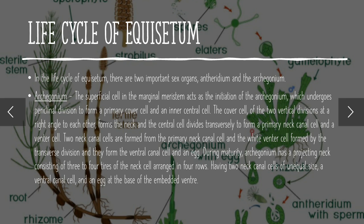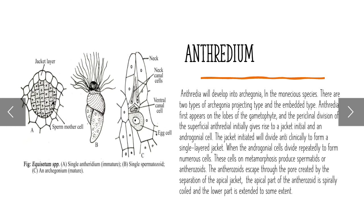In the life cycle: the archegonium is the female reproductive organ, and the antheridium is the male reproductive organ, which contains sperm.